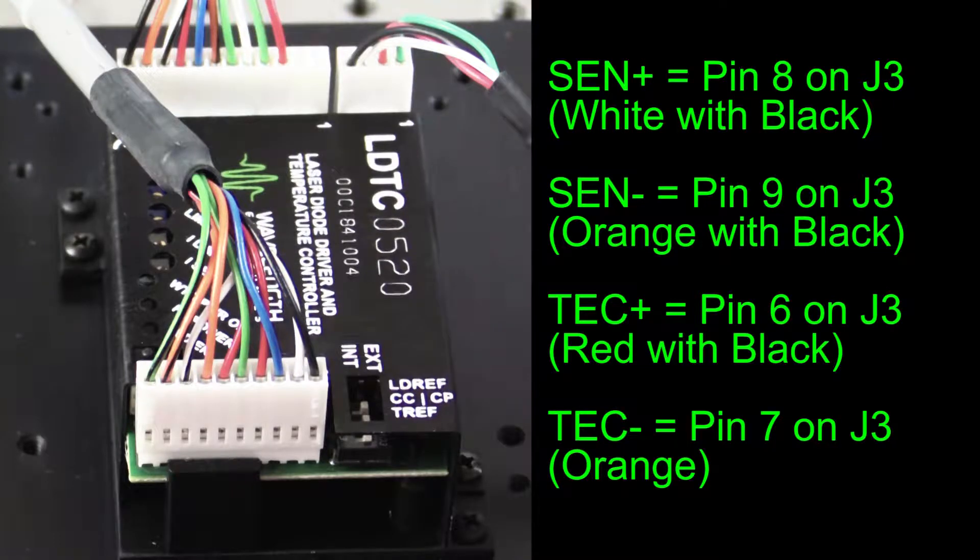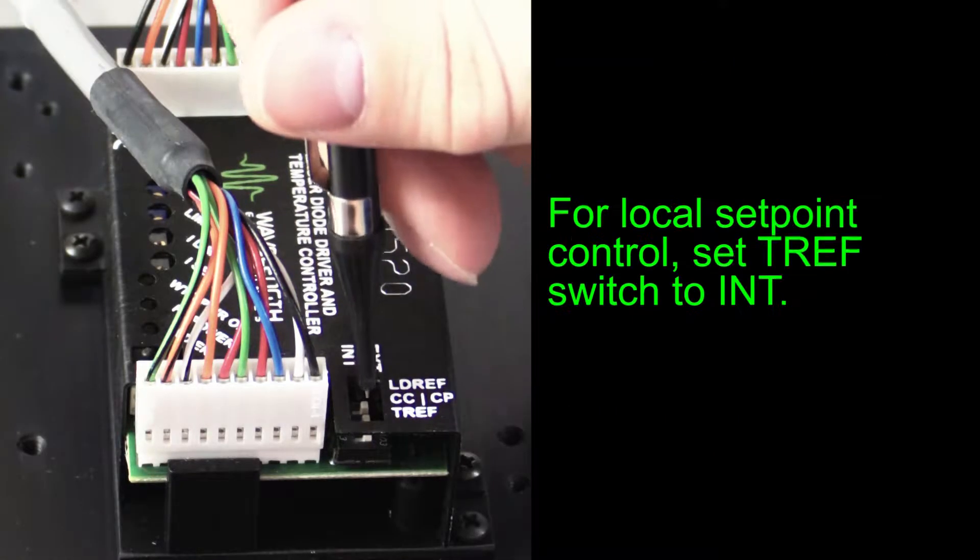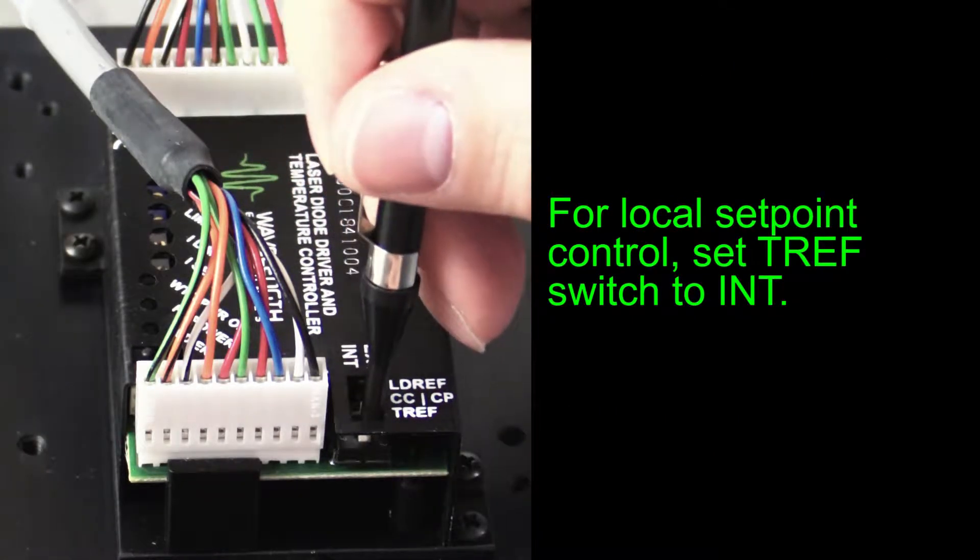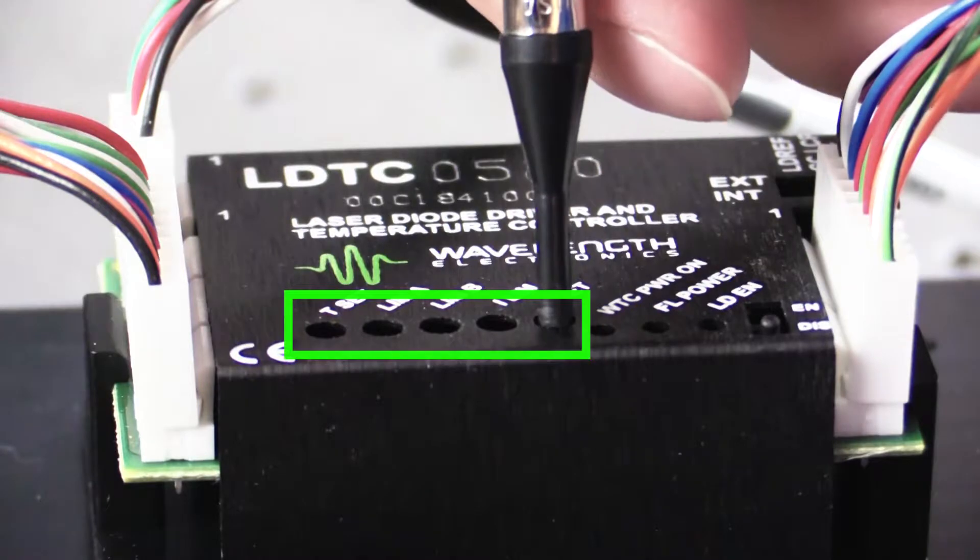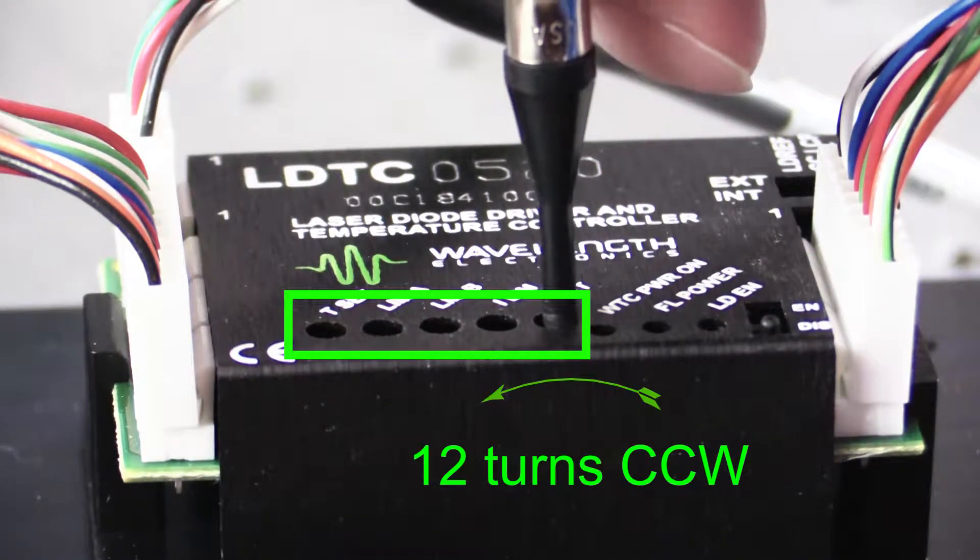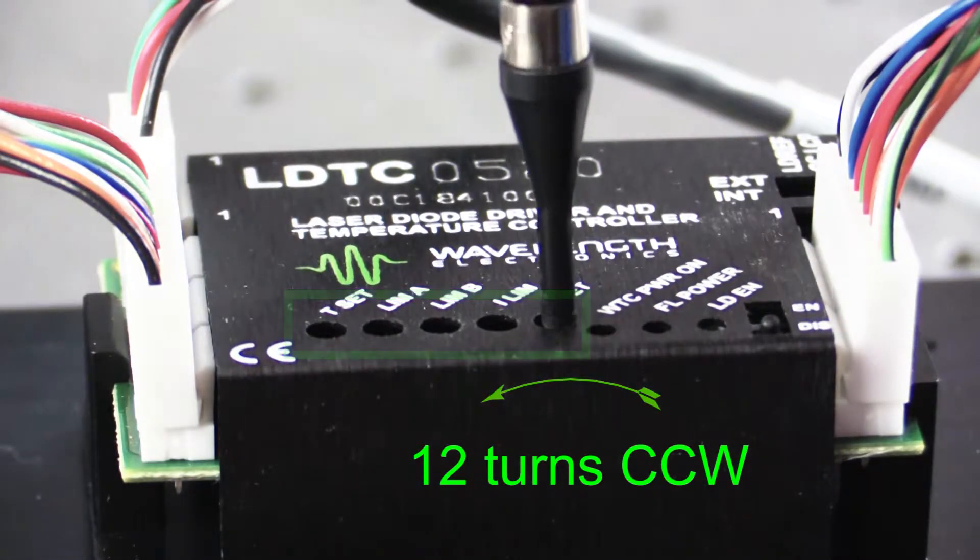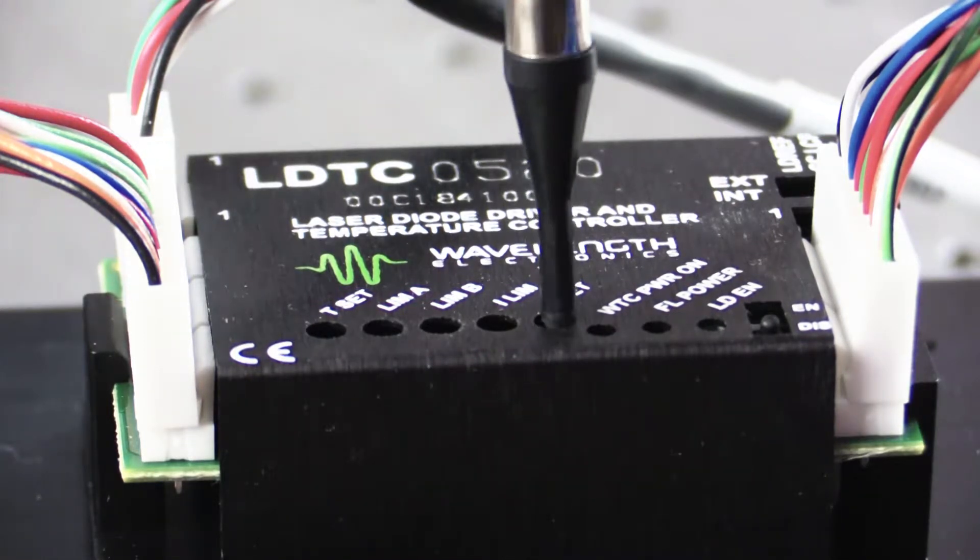Place an ammeter in series with the TEC for configuration. We will control the temperature set point locally, so the TREF switch must be put to the internal position. Before powering the unit, turn all of the trim pots counterclockwise 12 turns to zero them out. This ensures that no current will flow to the loads when power is applied, and will trigger the temperature control fail-safe circuit.